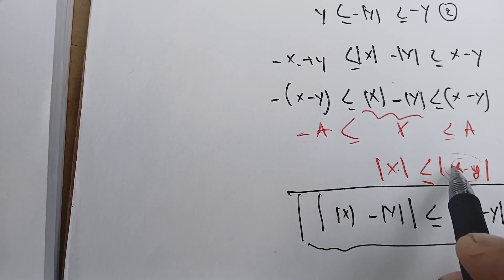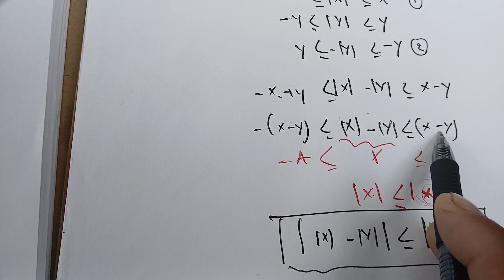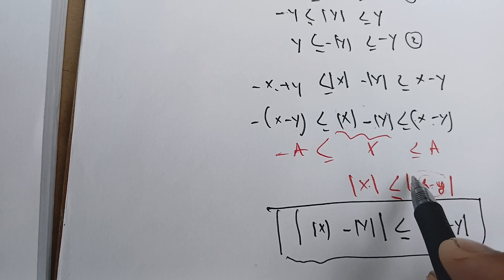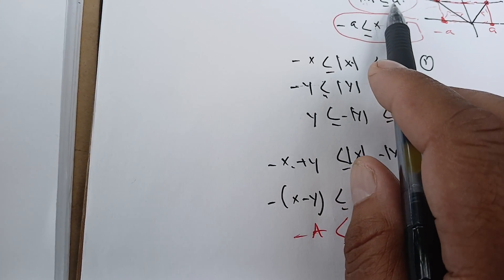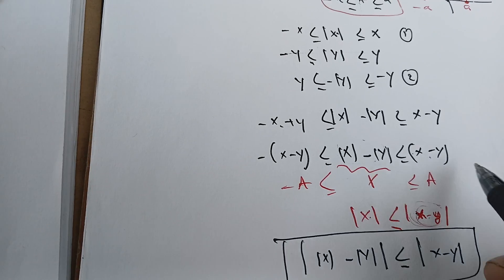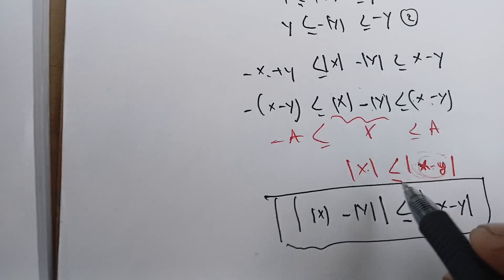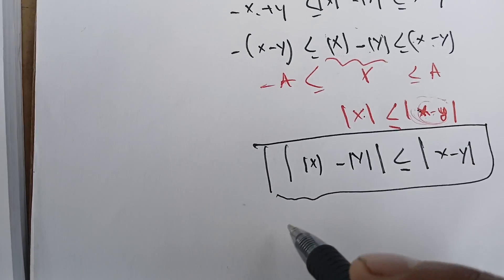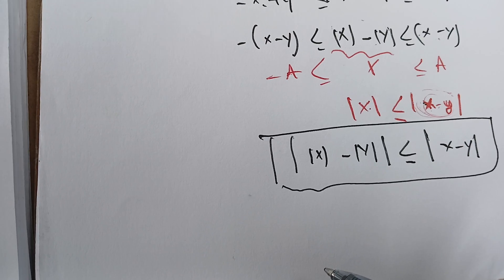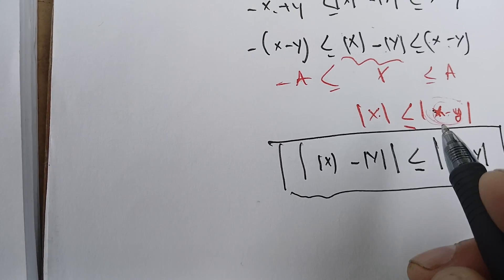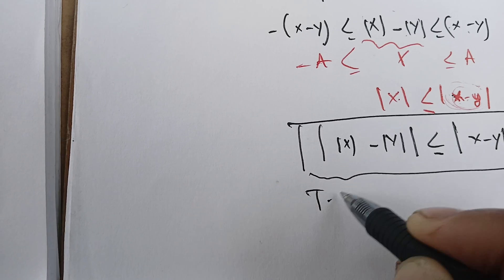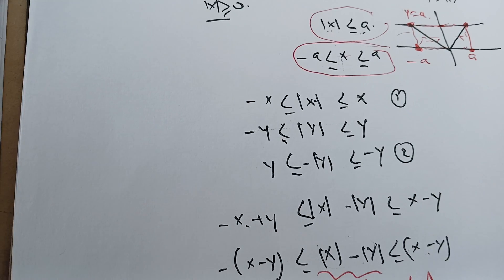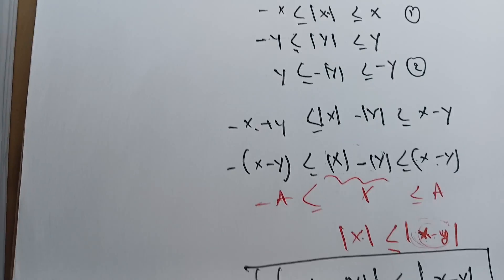The only thing we have to make sure is that A is positive, so that we can apply the absolute value property — and by assumption our A is positive. That's the only missing part we have to add to make this work. This proves that our result is true. We can also prove it in a similar fashion using the triangle inequality, but I think this is enough — all the steps shown here prove the required result.